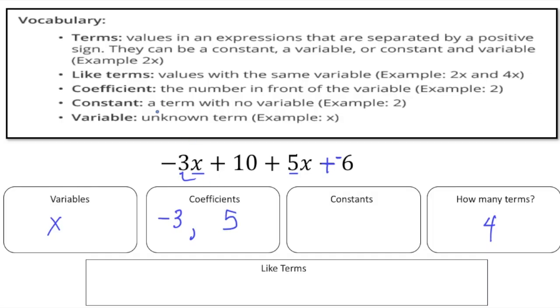And then finally the constants. A constant is a term with no variable. So if you notice, over here we have no variable. So negative 6, that's a constant. And then we have one more. We have a 10. So that's a constant.